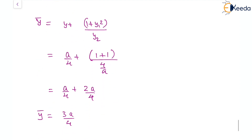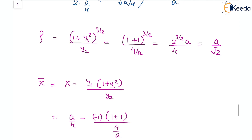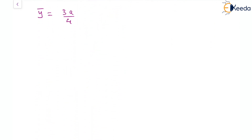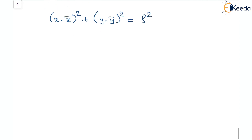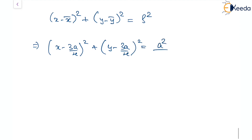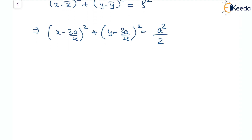We have the center of curvature (x̄, ȳ) = (3a/4, 3a/4) and radius ρ = a/√2. The equation of the circle of curvature is (x − 3a/4)² + (y − 3a/4)² = a²/2. This completes finding the radius, center, and equation of the circle of curvature.